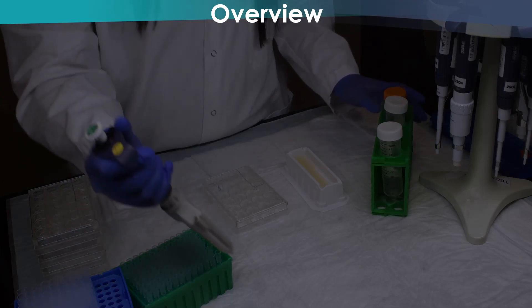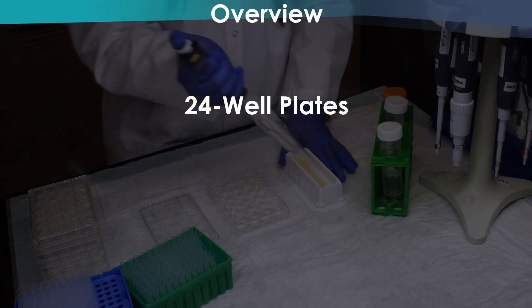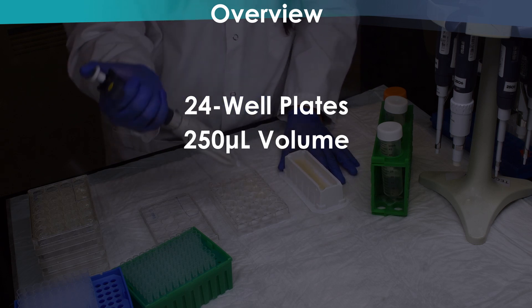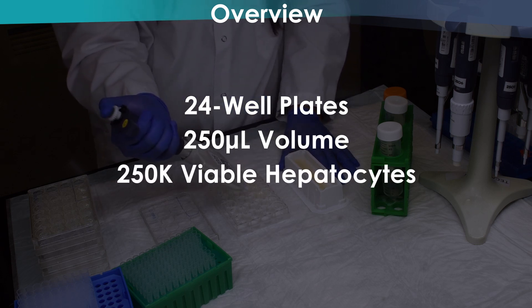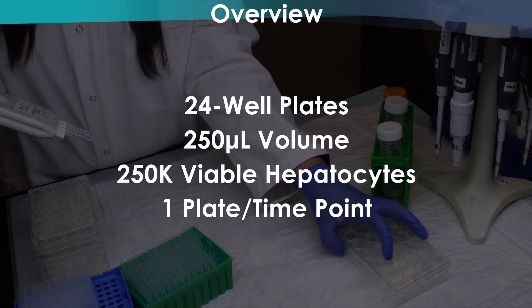As a general overview of the protocol, hepatocyte incubations are typically carried out in 24-well plates in a 250-microliter volume. Each incubation contains 250,000 viable hepatocytes, and each plate is used for a single time point of the assay and contains multiple treatments.